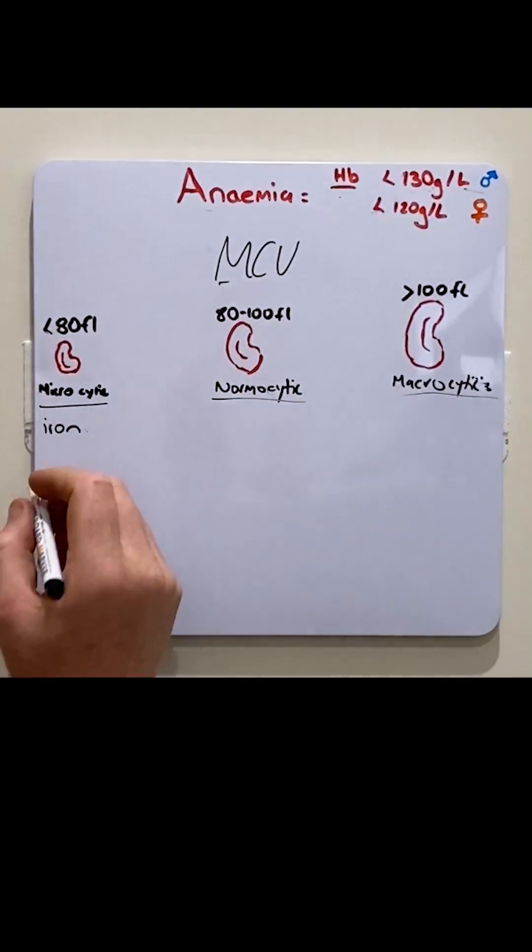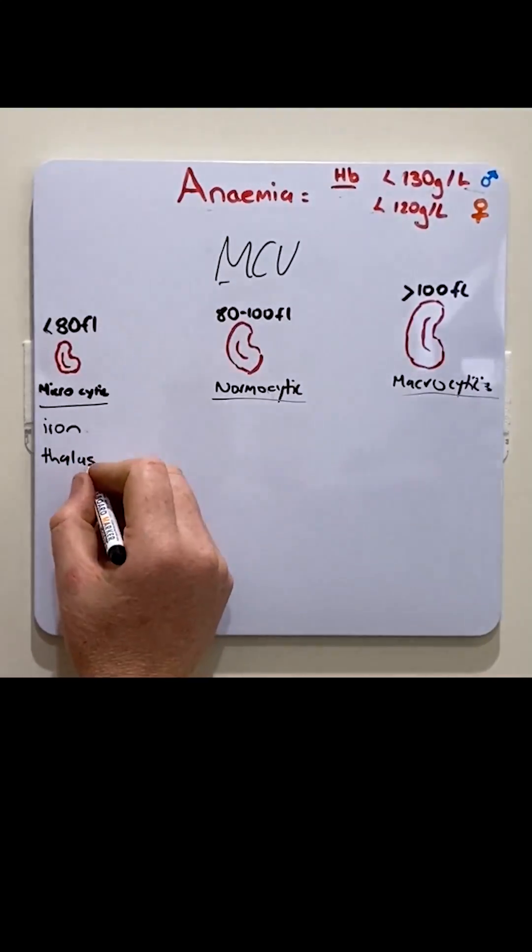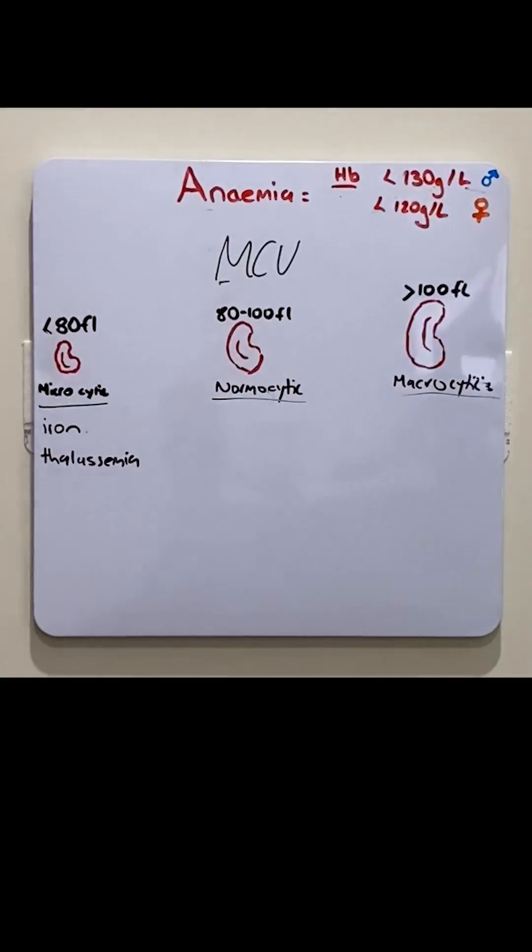Another common form of microcytic anemia is thalassemia. This is where you have a genetic mutation of the protein in hemoglobin, which causes a production problem and results in small red blood cells.